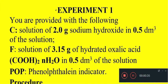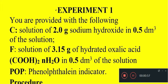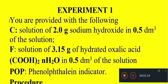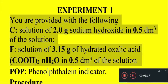Experiment number one. You are provided with the following solutions. Solution C contains 2 grams of sodium hydroxide in 0.5 decimeter cubed of solution. Solution F contains 3.15 grams of hydrated oxalic acid — that is our compound, oxalic acid which is hydrated. So we are going to find the amount of water of crystallization of oxalic acid. Our indicator is phenolphthalein for titration. That is our data generally.